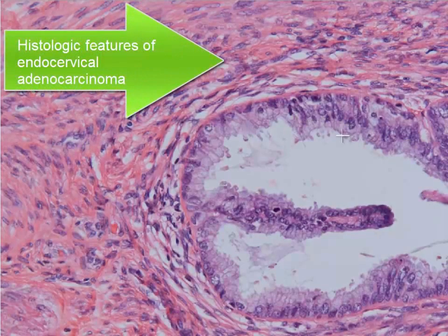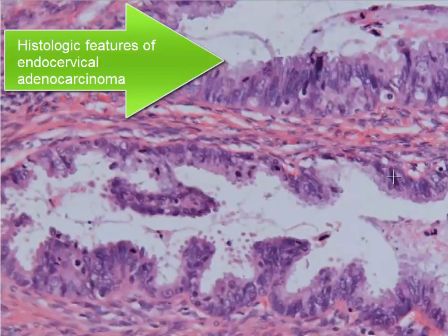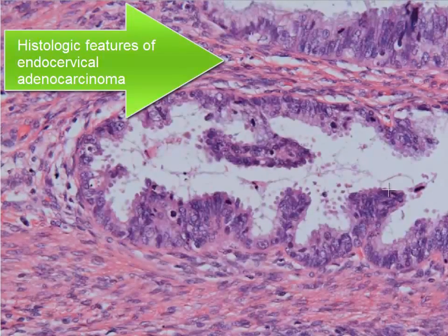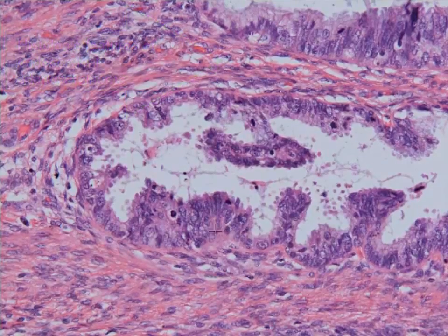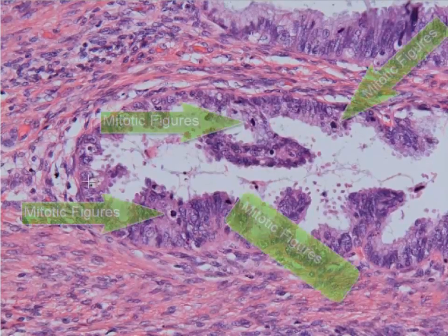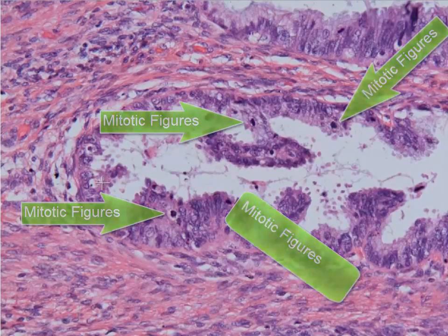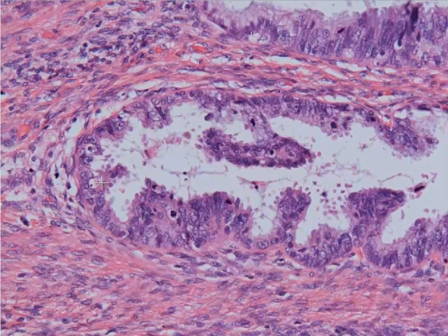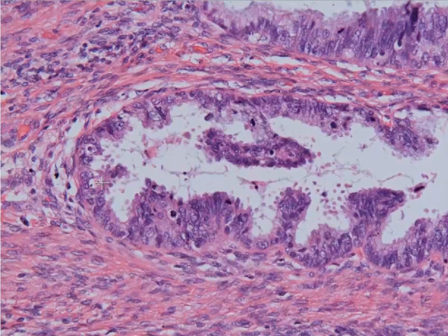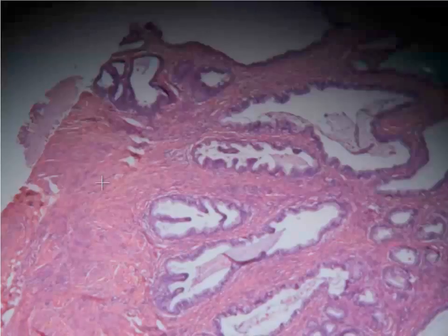You have basally oriented nuclei that line up along this pink basement membrane and they look like they're behaving themselves. As you move to the right, the nuclei begin to stratify and there is an increase in mitotic activity. Right next door, you can see what we would call adenocarcinoma in situ — the nuclei are stacked up on top of each other, stratified, with mitotic figures and apoptotic debris, indicating a high level of cell turnover. This is neoplastic glandular epithelium, not yet invaded, but it is adenocarcinoma in situ associated with HPV infection.